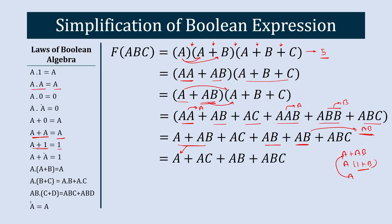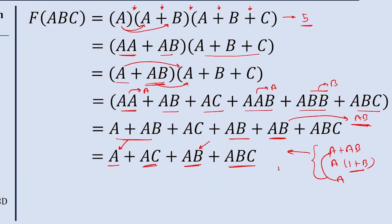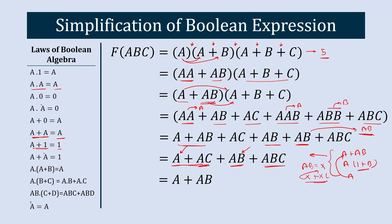This term is converted into A, and the two AB terms combine into a single AB. Similarly, A plus AC simplifies to A by the same law. For AB plus ABC, if we let AB equal X, then X plus XC equals X, so AB plus ABC equals AB. So the further simplified equation has this term simplified to A, and the entire other term simplified to AB.